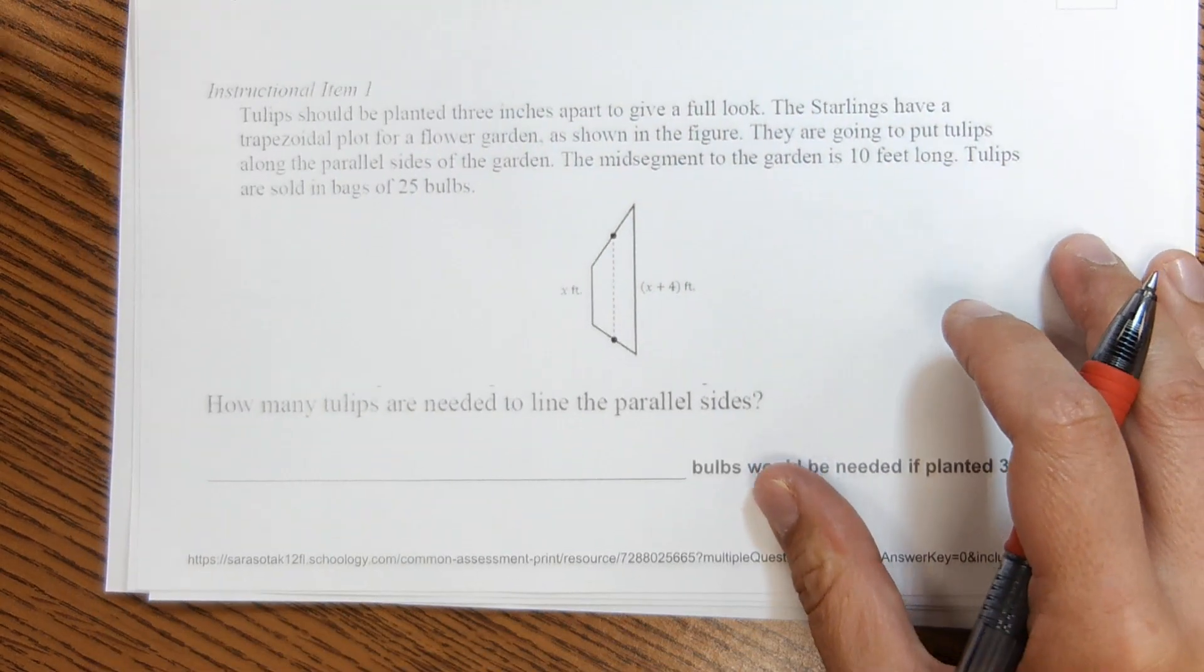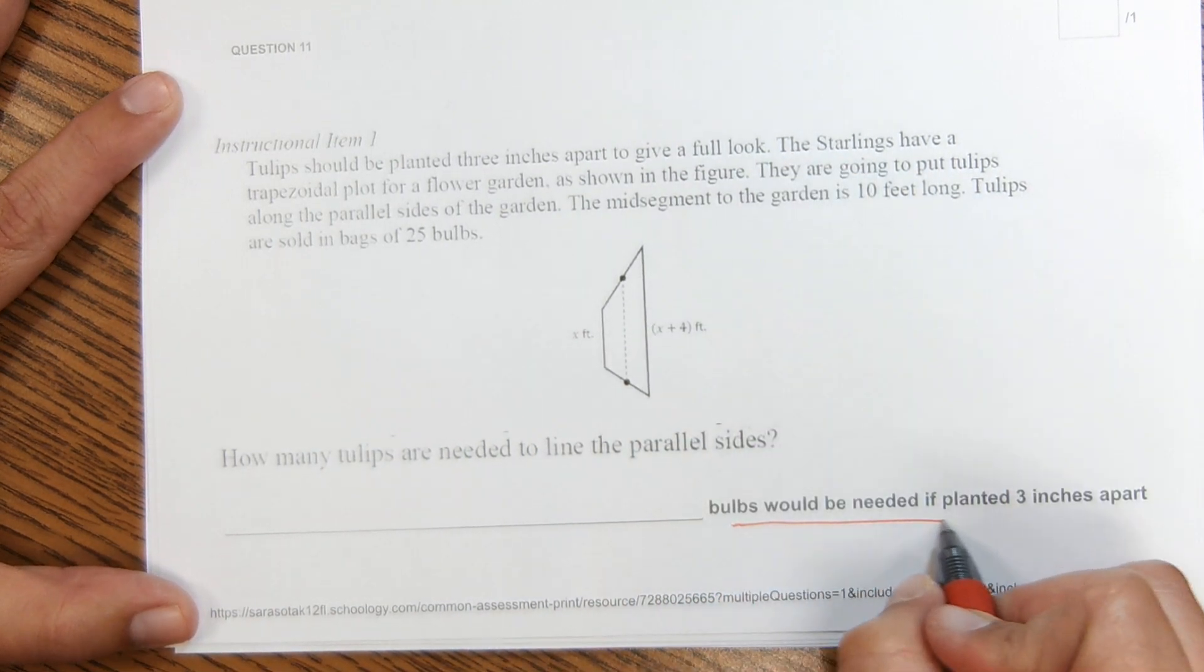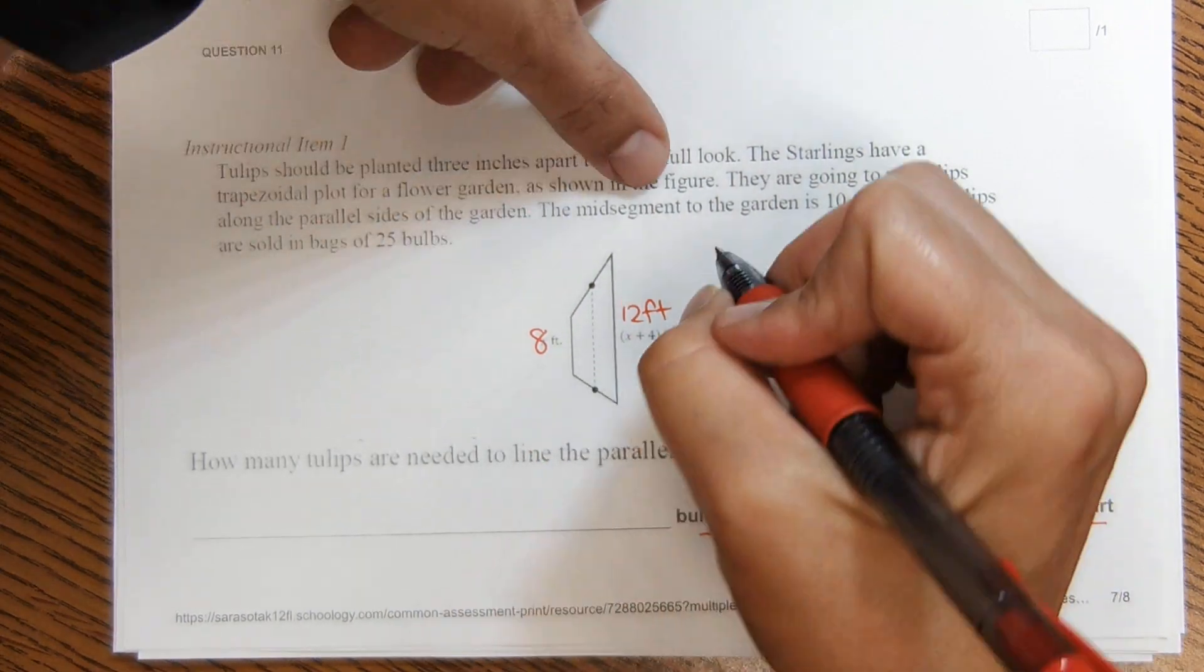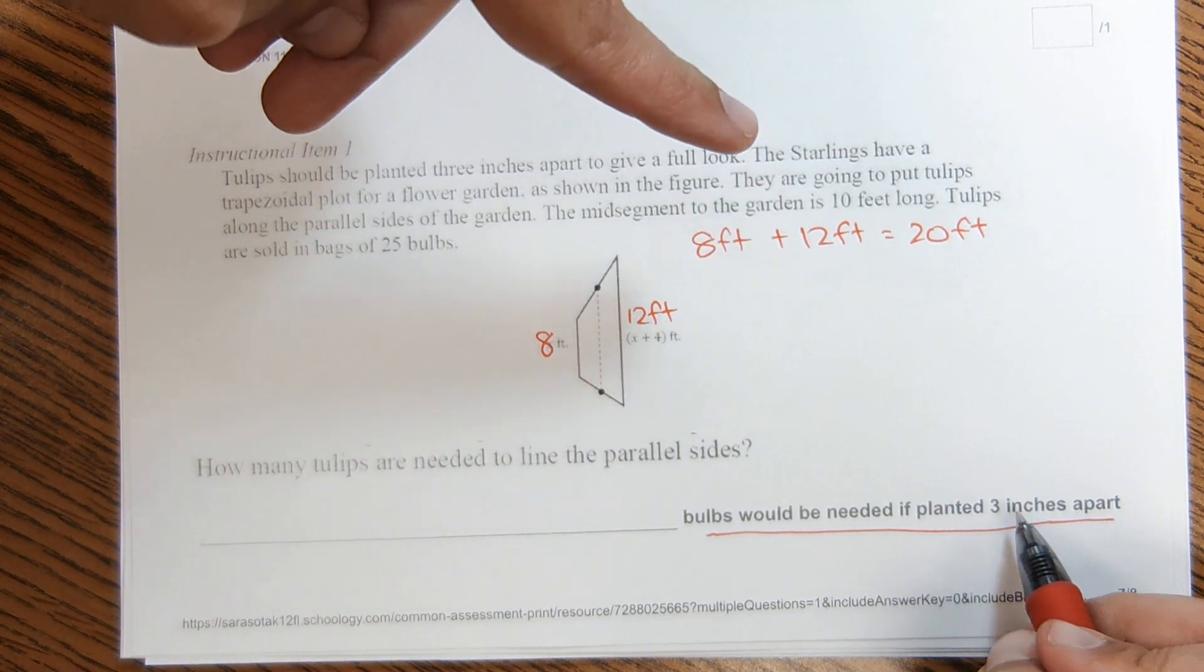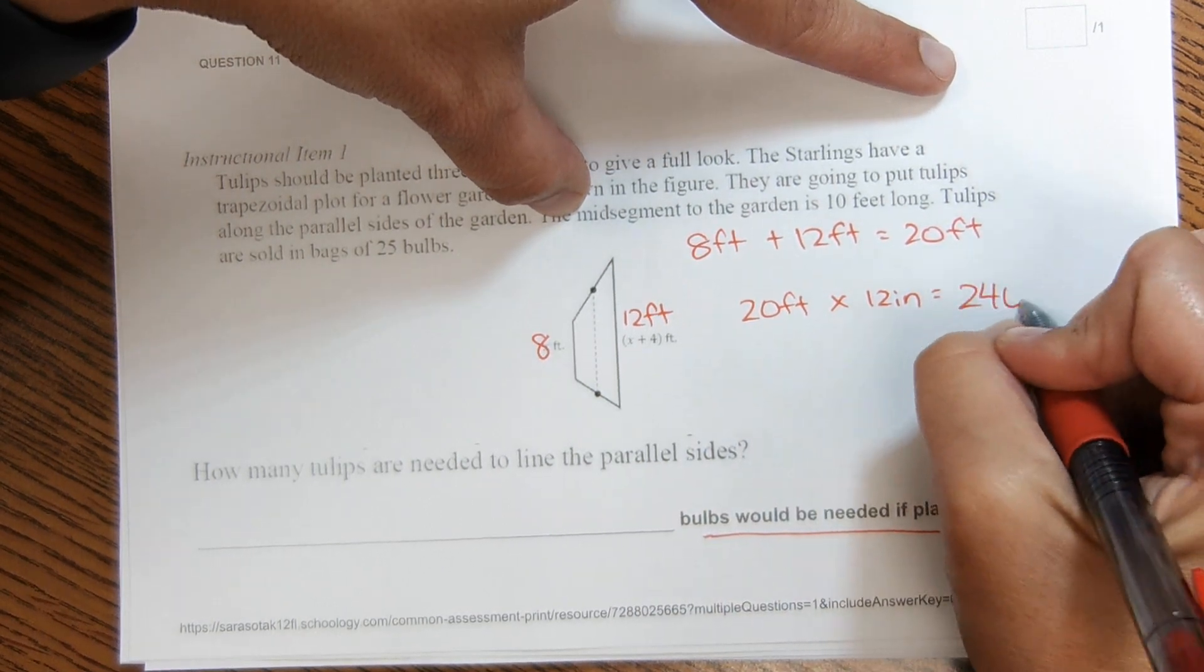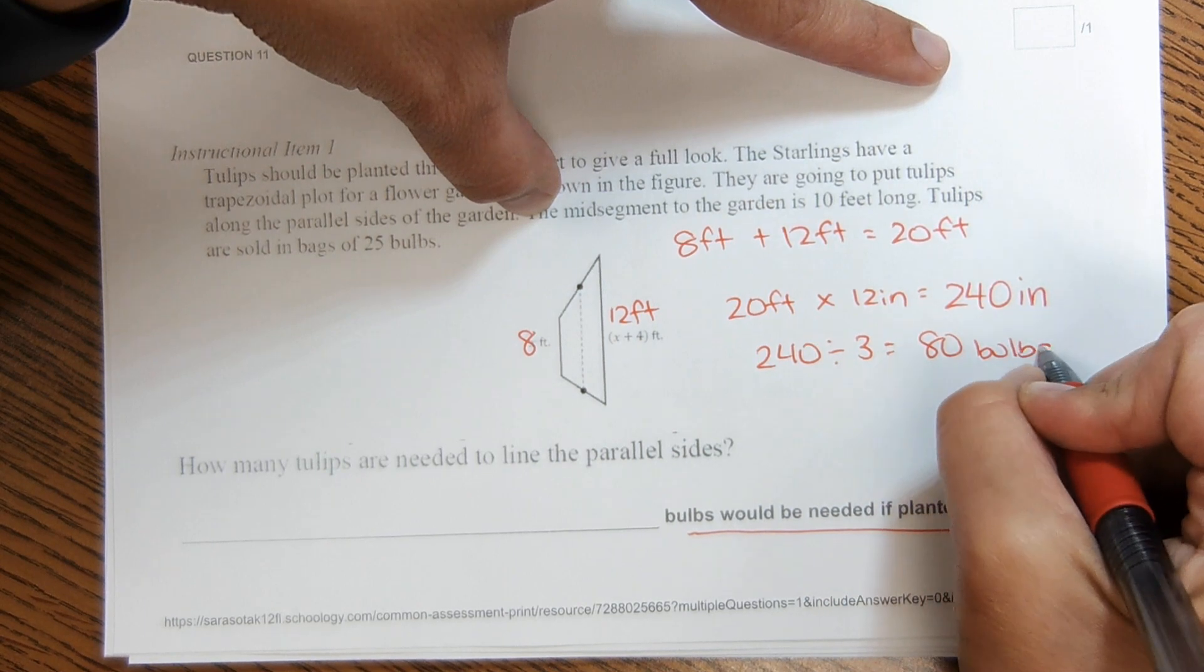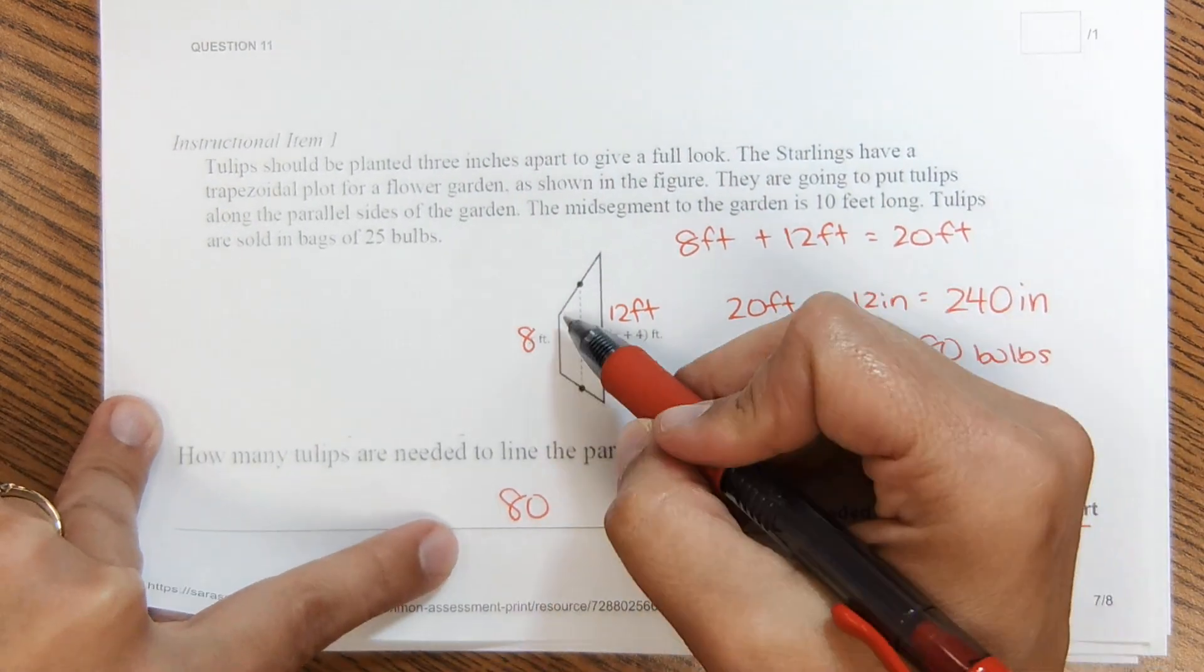So for this part, same problem, but now it's asking how many tulips are needed to line the parallel sides, and the bulbs would be needed to be planted 3 inches apart. So here we have 8 feet, right? And then here we have 12 feet, and the bulbs are placed 3 inches apart. So first of all, 8 feet plus 12 feet is 20 feet where the tulip bulbs are placed. But we need to convert this to inches, and each foot has 12 inches, right? So we multiply those two numbers to get how many inches need to be covered. And then the bulbs are 3 inches apart. So we take 240 and divide by 3 to get 80 bulbs, like tulip bulbs. So this one's 80. Okay, and remember this number because it continues on the next page. So we need 80 bulbs to cover those two sides.